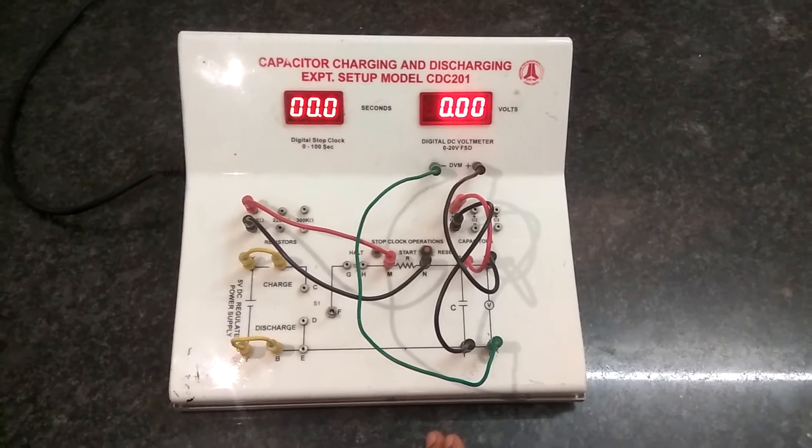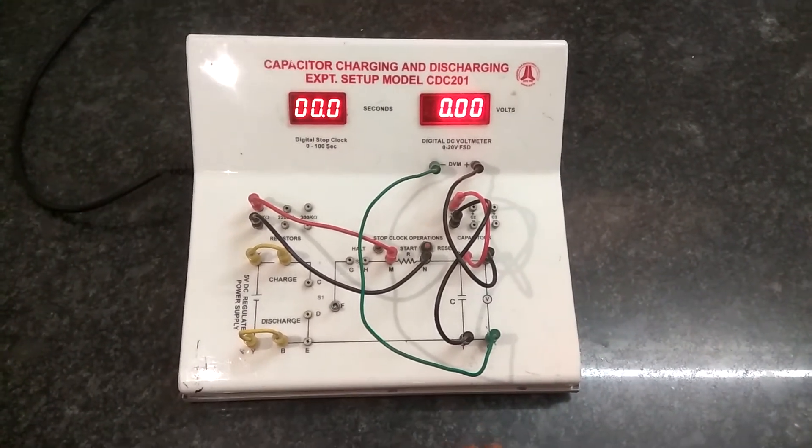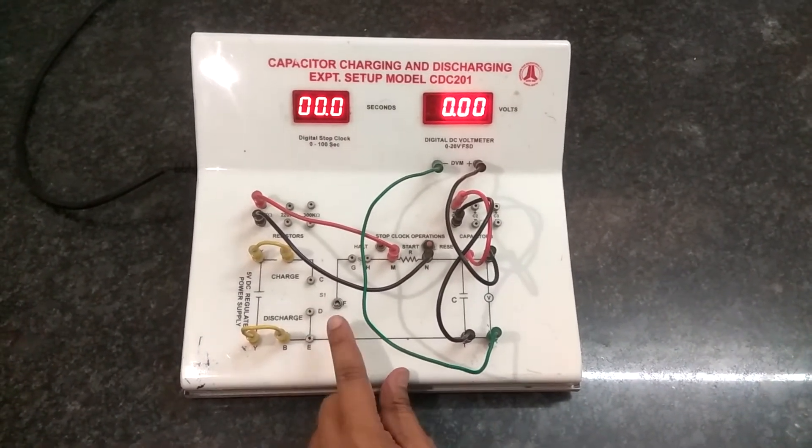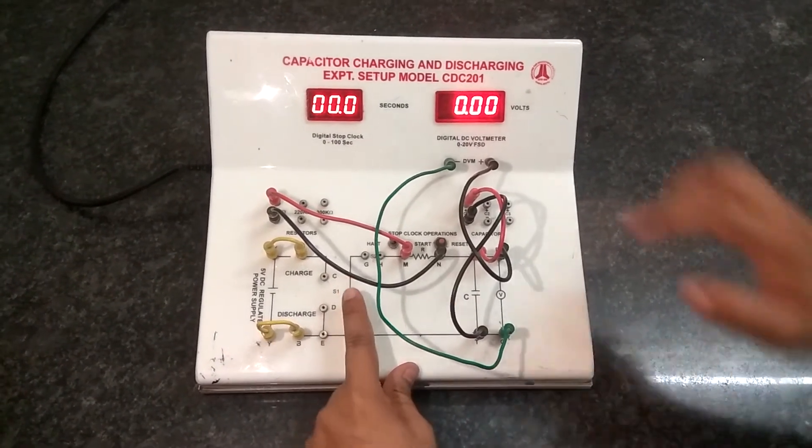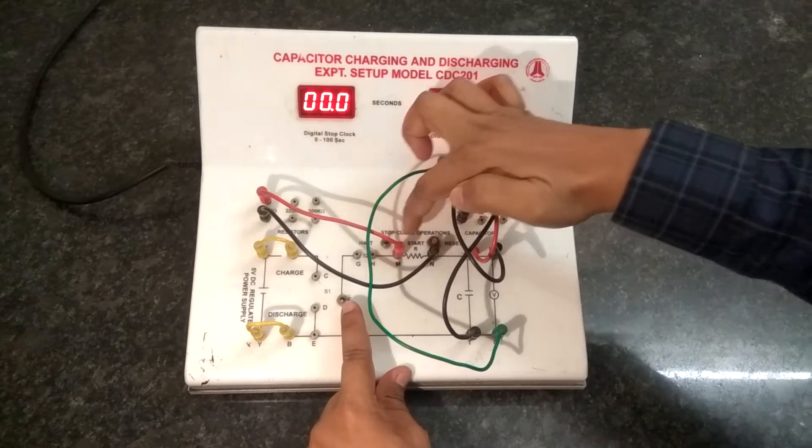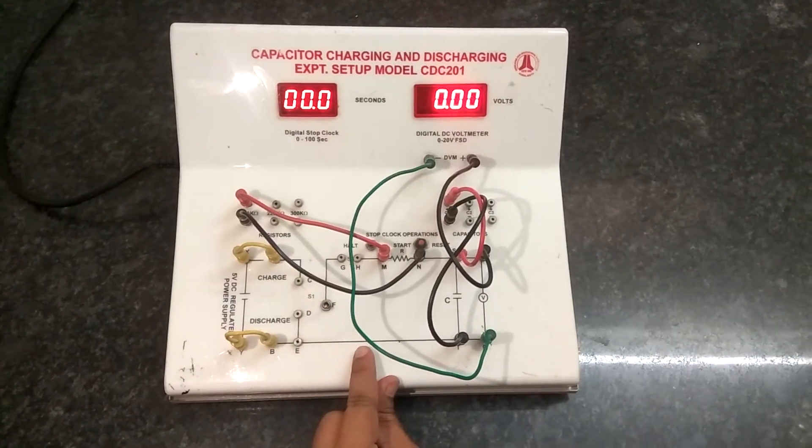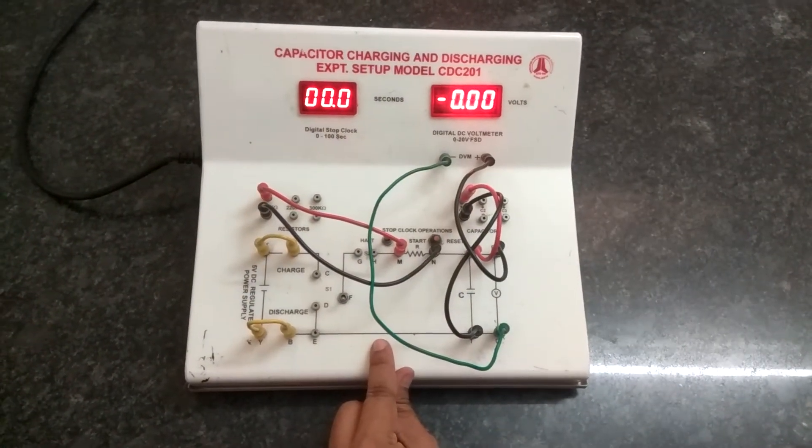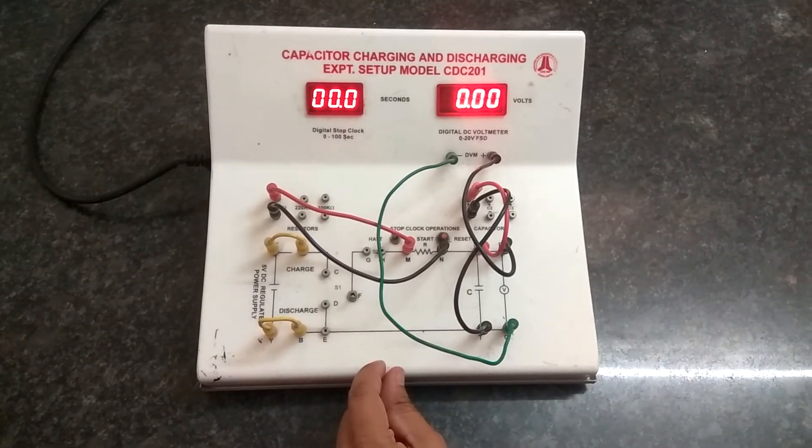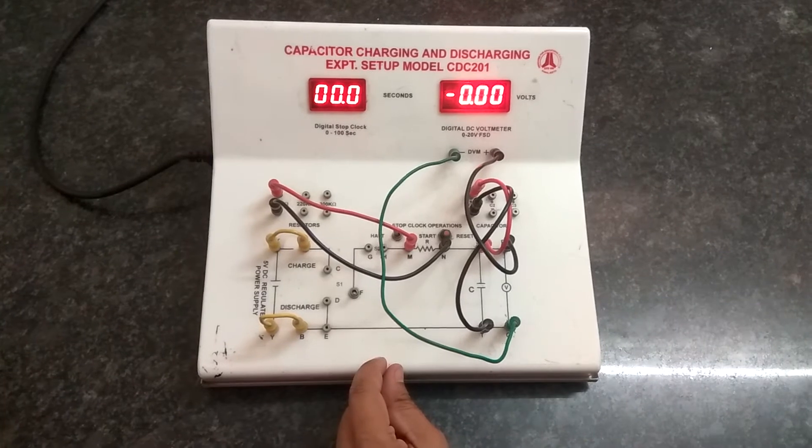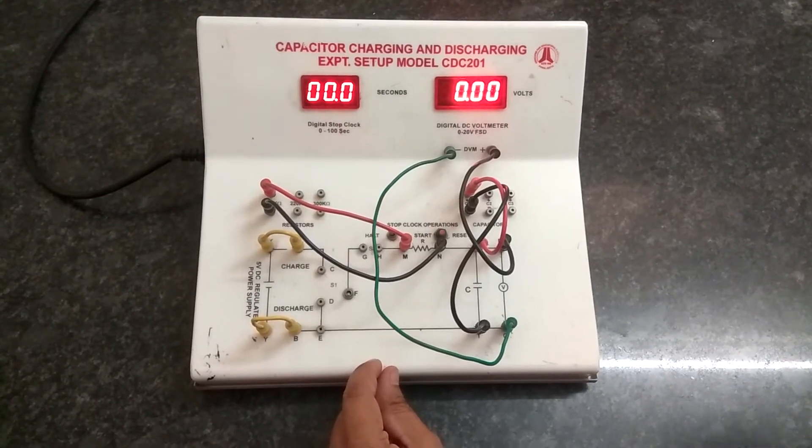Now, if I want to observe the charging of a capacitor, this knob has to be towards C and this halt button has to be towards start mode. And gradually, for every 15 seconds, we here record the voltage values, till the voltage remains constant, stabilized.